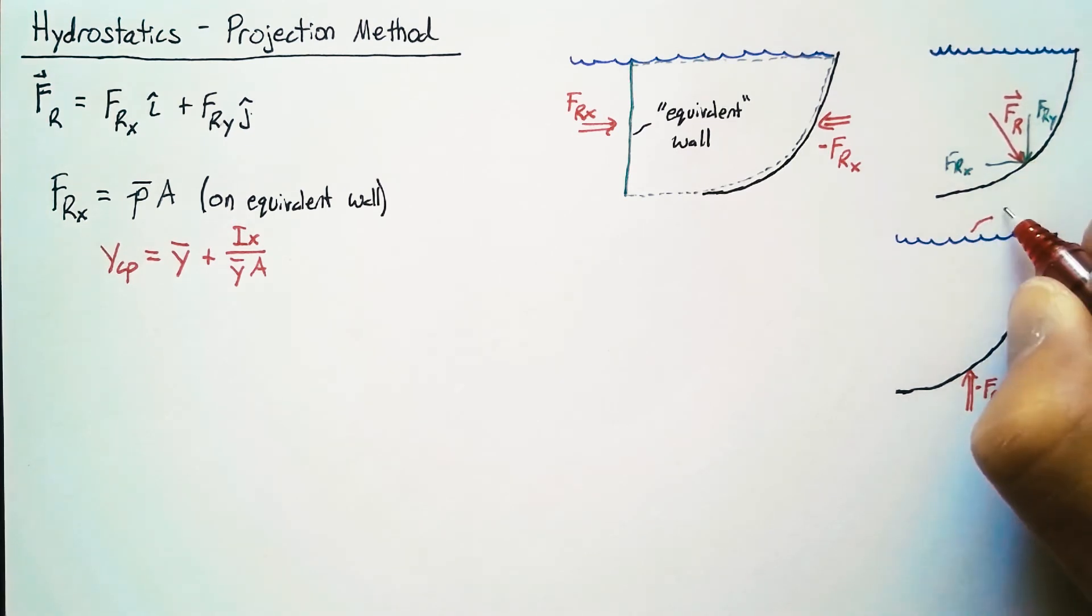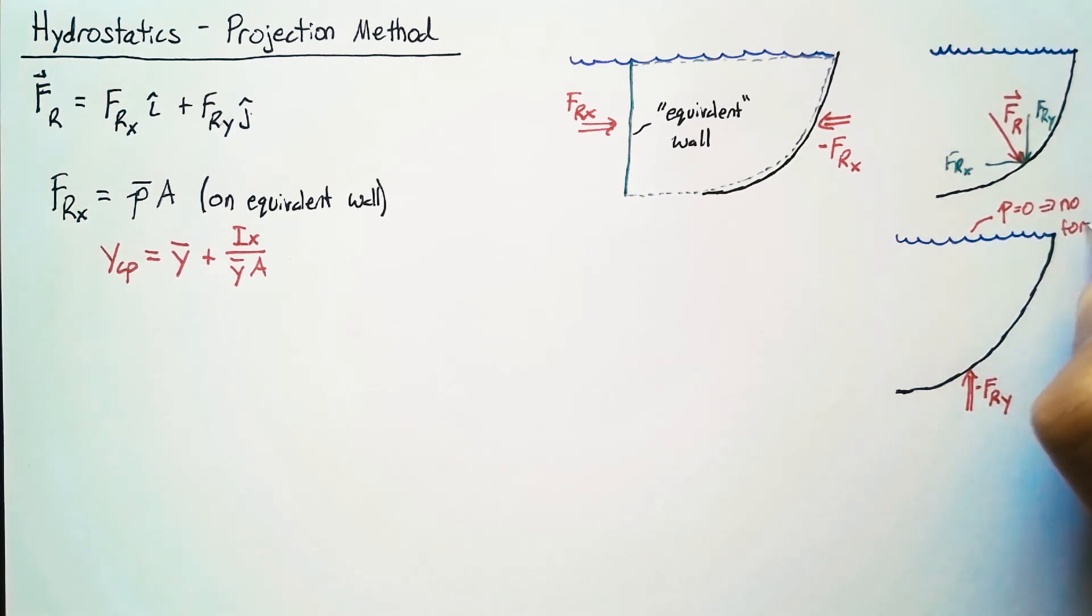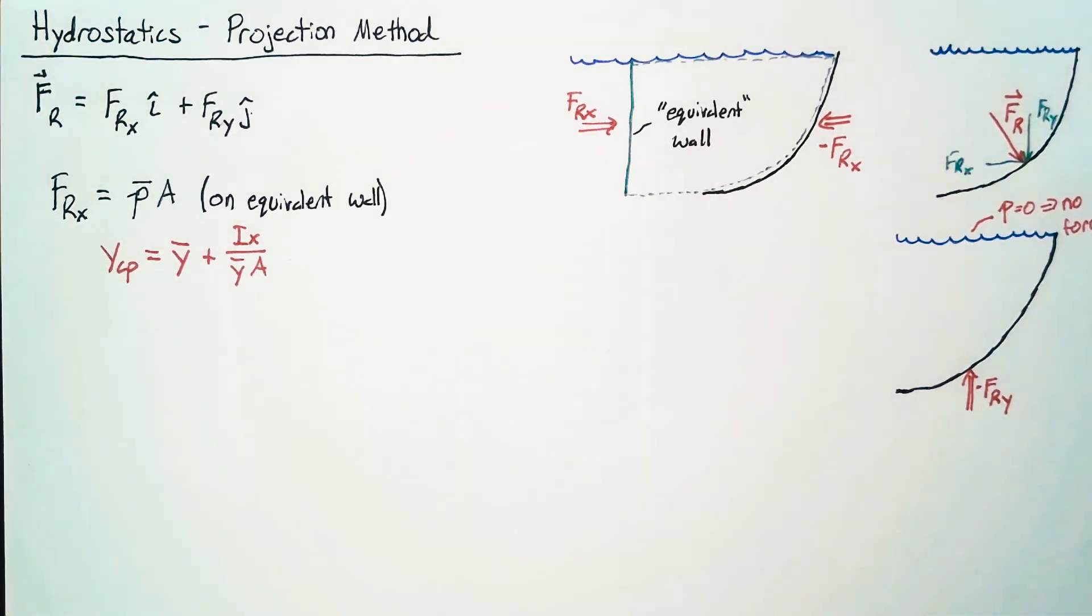At the top this time there's no pressure, so we know that there's no force on that top surface. We still have static equilibrium, so the sum of the forces is still zero.